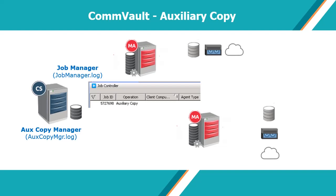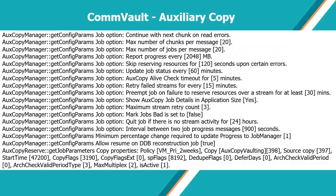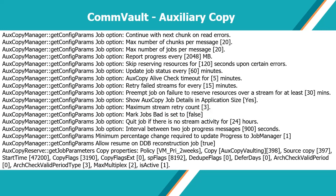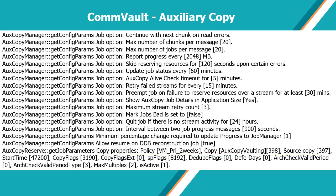Auxiliary Copy Manager then gets the auxiliary copy configuration parameters with job options. The job options look like this, and they are captured from the storage policy configuration. They are worth noting while troubleshooting.